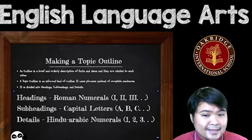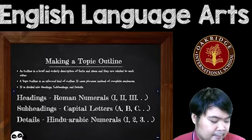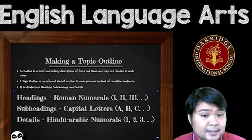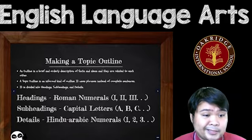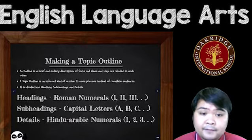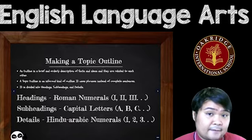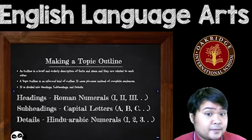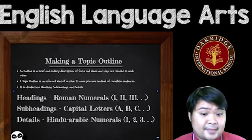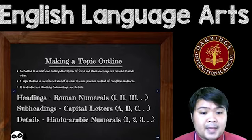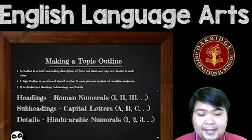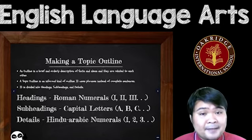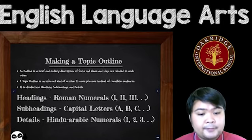The headings are written as Roman numerals — one, two, three, four, five — depending on how many headings you have. You've studied Roman numerals in math, right? The subheadings will be categorized by capital letters: capital letter A, B, C, and so on.